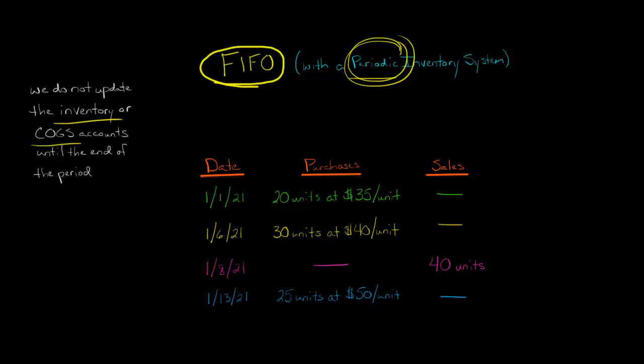So then the question is going to be, how do we recognize cost of goods sold? But before we get to that, finally, on January 13th, we purchase 25 board games at $50 per unit. So this is the series of purchases and sales that we've had throughout the period.